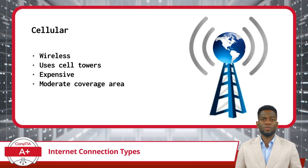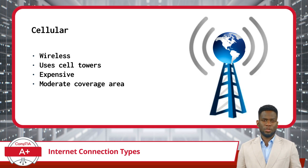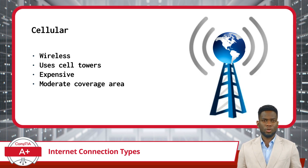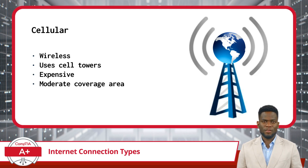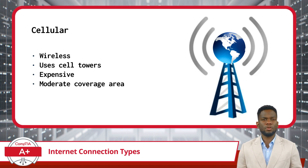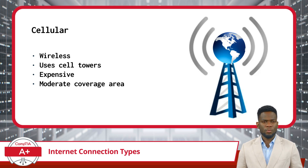Cellular Internet, also known as mobile Internet, is a type of wireless Internet access that utilizes cellular networks to provide connectivity to devices such as smartphones, tablets, and laptops. It enables users to access the Internet while on the go or traveling, without relying on fixed-wire connections. Each device has an antenna that connects to a cellular network infrastructure consisting of interconnected base stations, or cell towers, strategically placed to provide coverage over a specific geographic area.